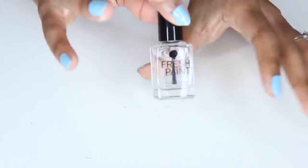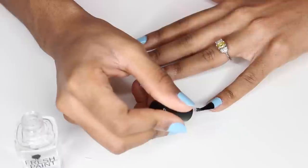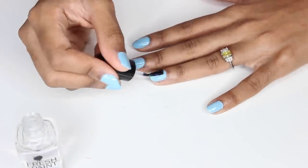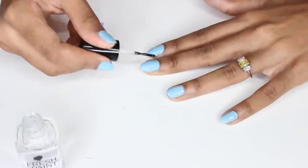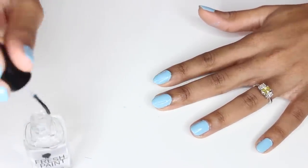Then I apply this top coat—Fresh Paint Super Fast Dry Top Coat, which is called Finished. You can get it pretty much anywhere; I think I've seen it at Five Below. I just apply one coat of that to the top of the nail polish, and that's pretty much it.